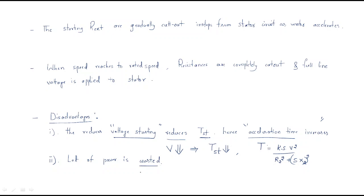Also, a lot of power is wasted. The power wasted is I²R — since resistance is increased, a large amount of power is wasted in the external resistances. These are the disadvantages of stator resistance starting.